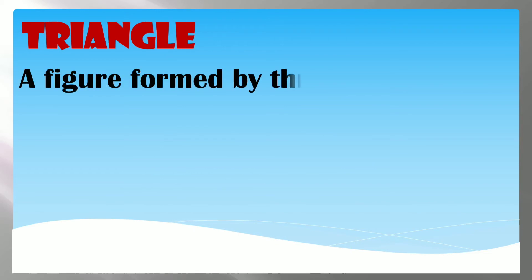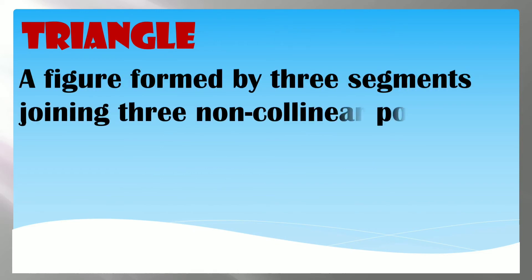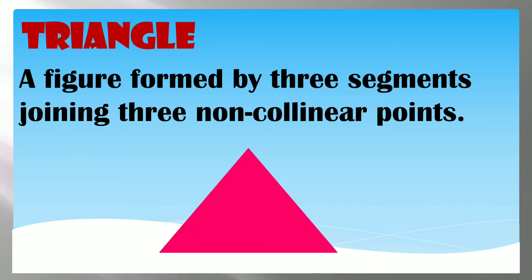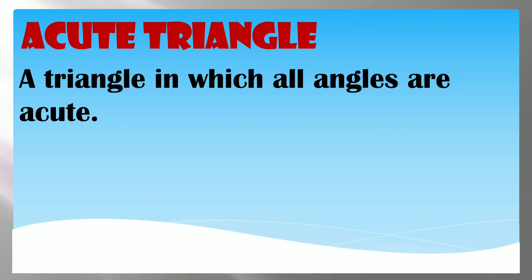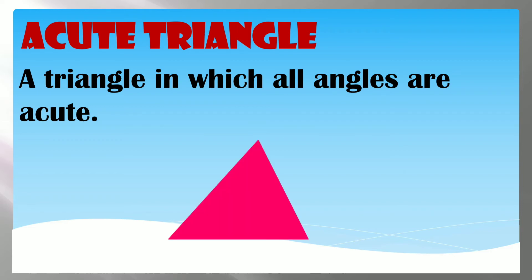A triangle is a figure formed by three segments joining three non-collinear points. Let us go through the types of triangles based on their angles. An Acute Triangle is a triangle in which all angles are acute. For example, a triangle with angles of 60, 60, and 60 degrees is an acute triangle, since the total measure of a triangle is 180.